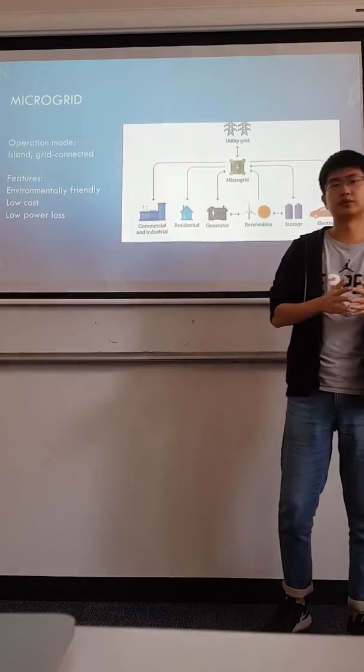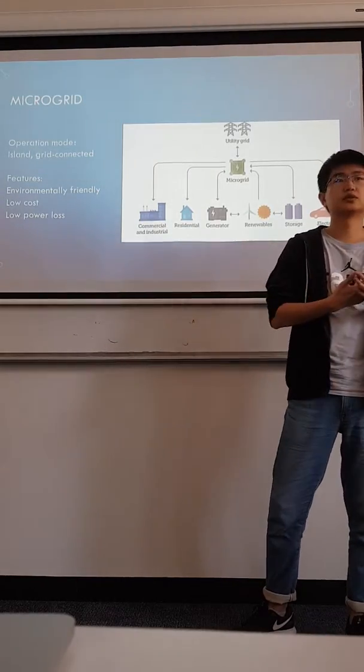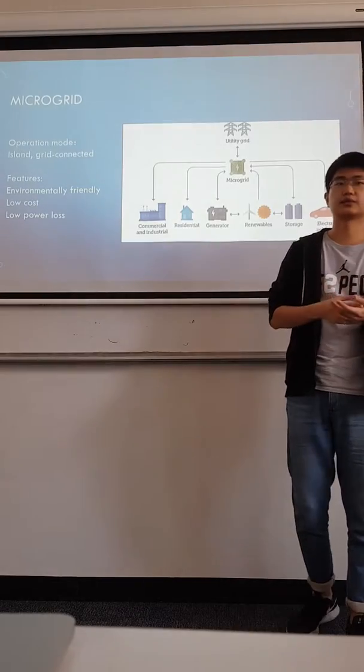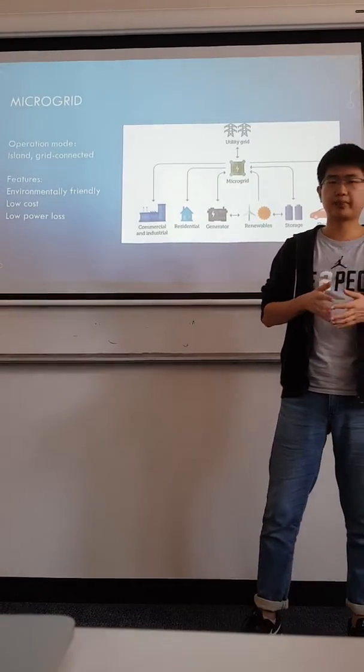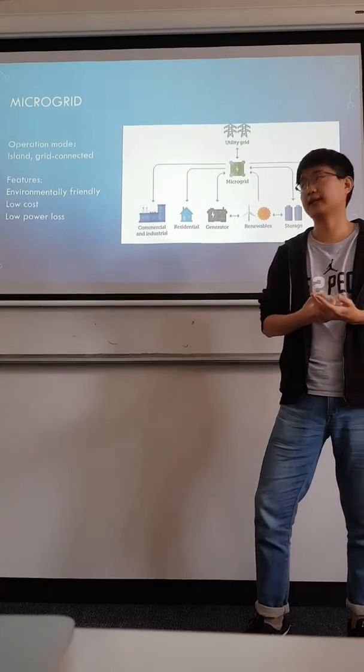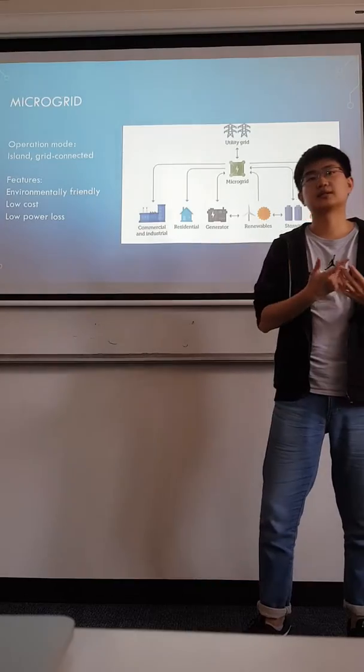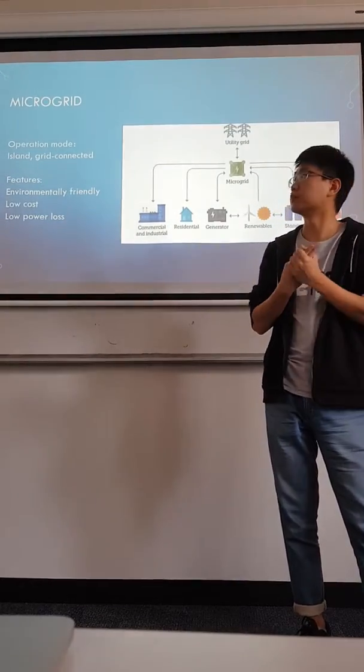There are two operation modes of the microgrid. One is island mode and the other is grid-connected mode. Island mode is when the microgrid is disconnected from the grid, and grid-connected mode is when the microgrid is connected with the grid.